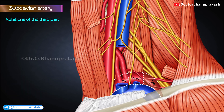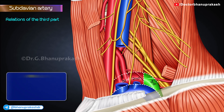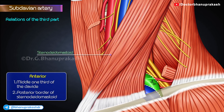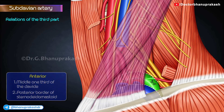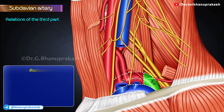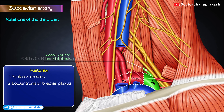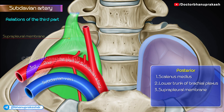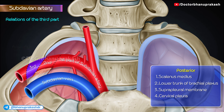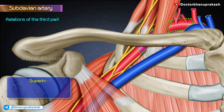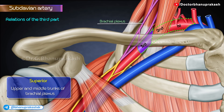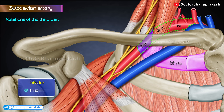Relations of the third part. Anteriorly: middle one-third of the clavicle and the posterior border of sternocleidomastoid. Posteriorly: scalenus medius and lower trunk of the brachial plexus, suprapleural membrane, cervical pleura and the apex of the lung. Superiorly: upper and middle trunks of the brachial plexus. Inferiorly: first rib.